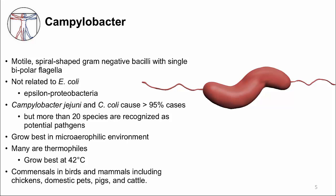Over 20 species are thought to be pathogens, but Campylobacter jejuni and Campylobacter coli cause more than 95% of cases. Unlike E. coli, it has different growth requirements — it can't tolerate a lot of oxygen, so it needs a microaerophilic environment. Many are thermophiles that like to grow at higher temperatures, 42 degrees Celsius, because they normally live in the GI tract of birds, which have higher body temperatures.